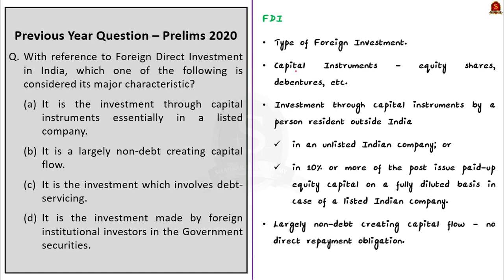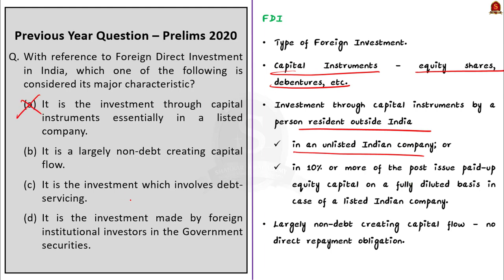The capital instrument can be equity, debentures, or share warrants issued by Indian companies. FDI is the investment through capital instruments by a person resident outside India. FDI includes investment in listed as well as unlisted companies, so statement A is incorrect — it is not essentially a listed Indian company. The investment is also not associated with government securities but with capital instruments of equity shares and debentures, so we eliminate option B as well.